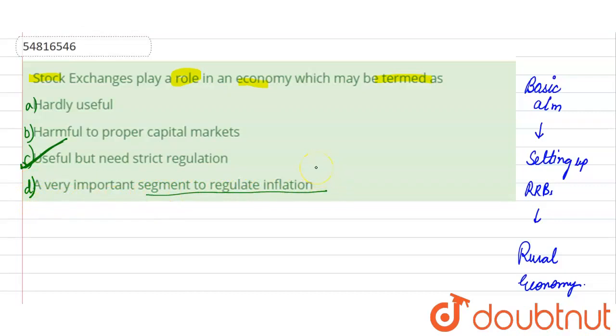The next it would be a very important segment to regulate inflation. Ye bhaat important segment hai. Isko hum ne regulate karna hai mehenkai ke liye. Basically the correct option it would be option C.